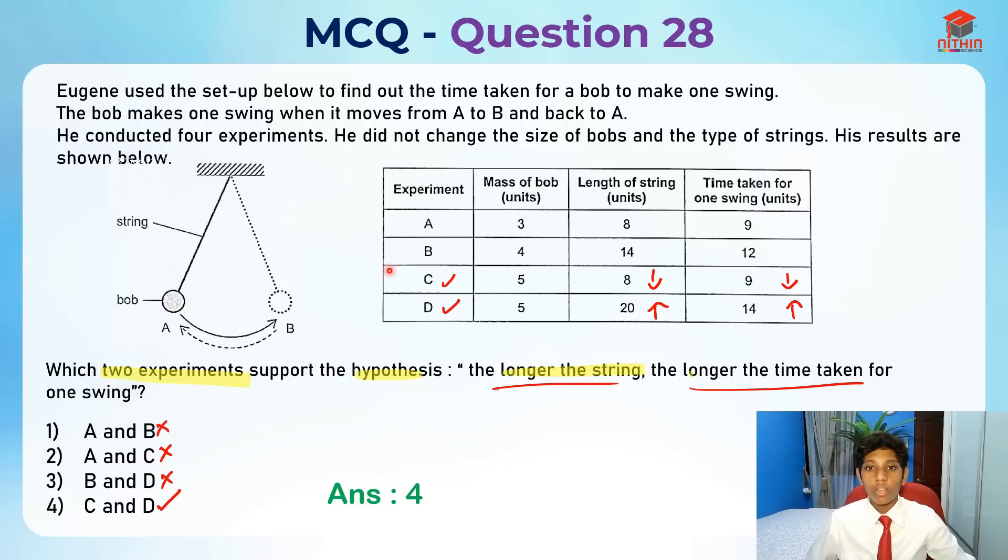I hope you understood my explanation for this question, question 28, testing us on the type of variables and tests, and fair tests basically. This is testing us on fair tests because the mass of the bob needs to be the same in order for us to test the longer the string, the longer the time taken for one swing.